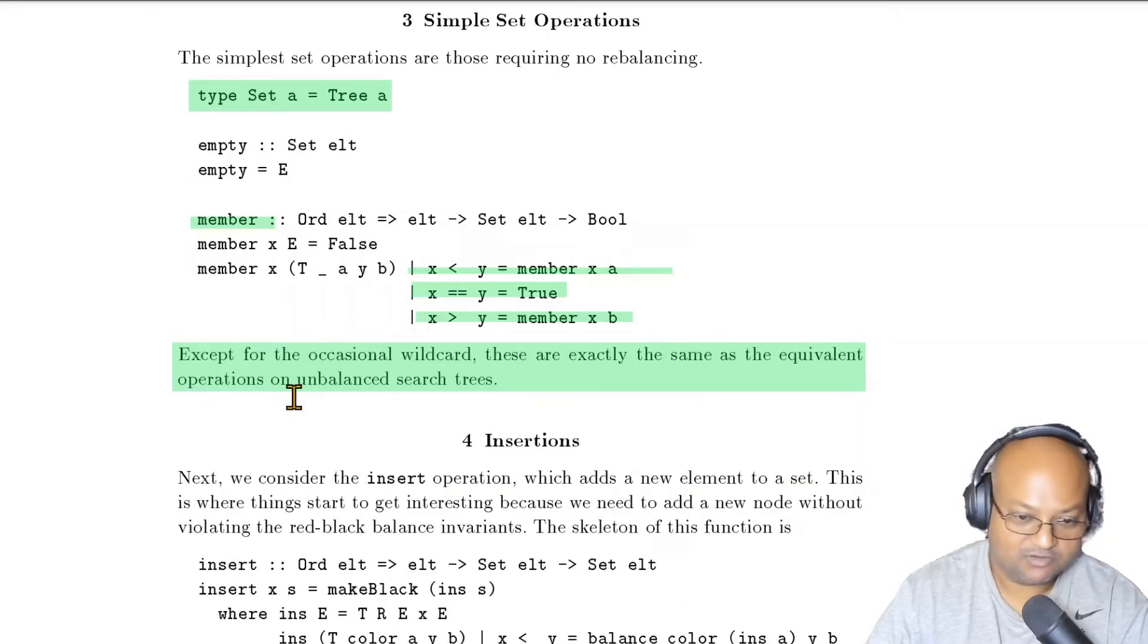Now in this paper, the author looks at specifically using red-black trees as sets, and looking at two specific operations on sets. One is to check for membership, and the other one is to insert an element into the set. So we simply define a set to be a tree, a red-black tree that we've just defined.